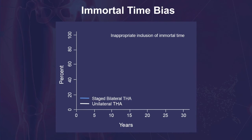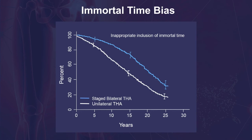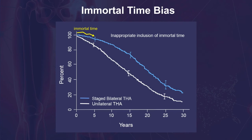This figure shows the Kaplan-Meier curves for the unilateral and staged bilateral groups, with follow-up starting on the date of surgery for the unilateral group and the date of the first surgery for the bilateral group. Within the staged bilateral group, the time between the initial surgery and the second surgery is immortal time, because these patients had to survive and be followed long enough to have the second surgery.